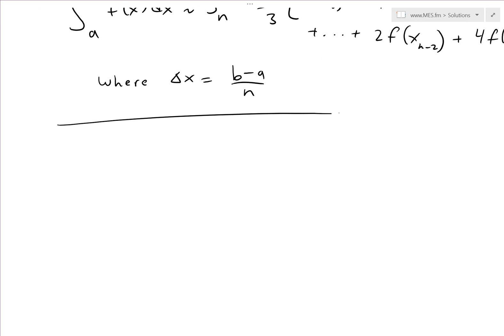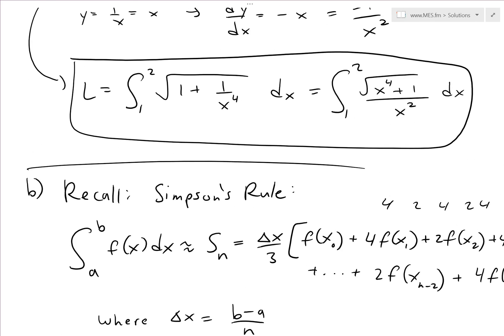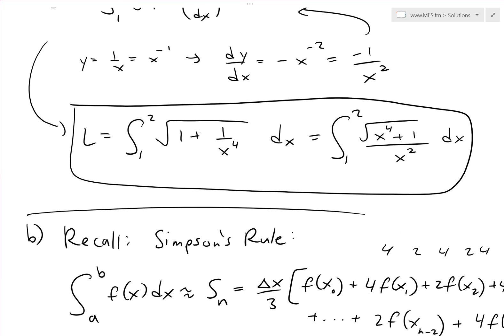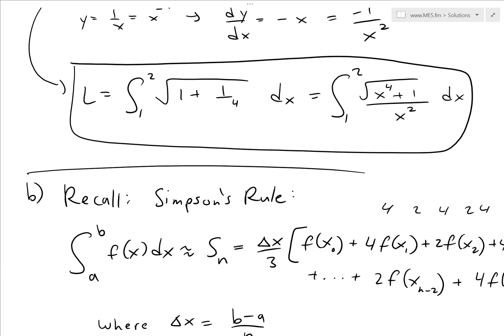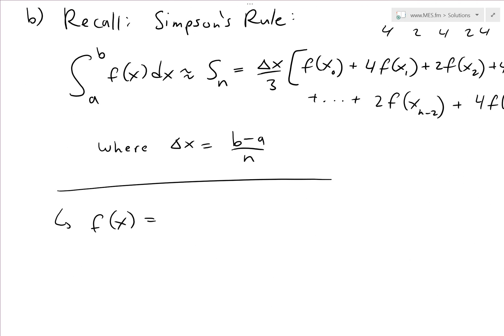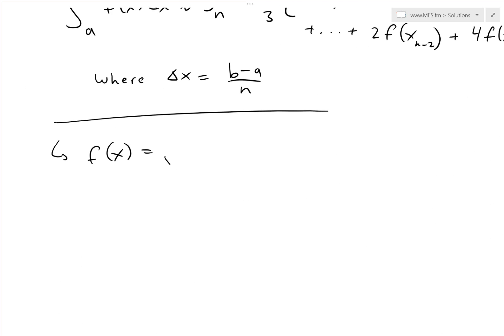So what we have right here is we're going to approximate the function f(x) equals. So that is this function or this one right here. Let's deal with this one right here. So we have this is square root 1 plus 1 over x^4. You can write it the other way like I showed or just leave it like this. So we'll just deal with this. And then our B is equal to 2.